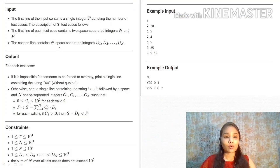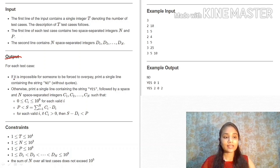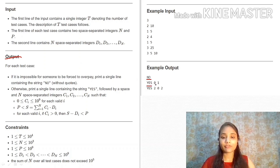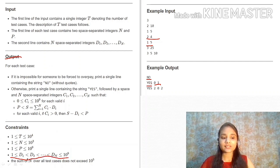Now let us see what the problem actually wants us to print — what is the output and what are the constraints. In the output, we need to print that if it is impossible for someone to be forced to overpay, then print a single line that is 'no'. Otherwise, if it is possible to overpay, we need to print 'yes' followed by the frequency of each denomination that we have paid. One more thing to keep in mind is that the denominations are given in ascending order, which will help us a lot.